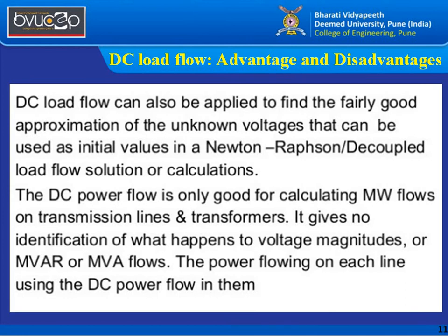DC load flow can be applied to approximate unknown voltages, which can be used as initial values for Newton-Raphson or decoupled load flow calculations — with all voltages initially set to 1 per unit and angle zero. The main limitation is that DC load flow only calculates megawatt (active power) flow on transmission lines and transformers; it gives no information on voltage magnitude or reactive power flow. When system stability must be considered, AC load flow analysis is necessary.